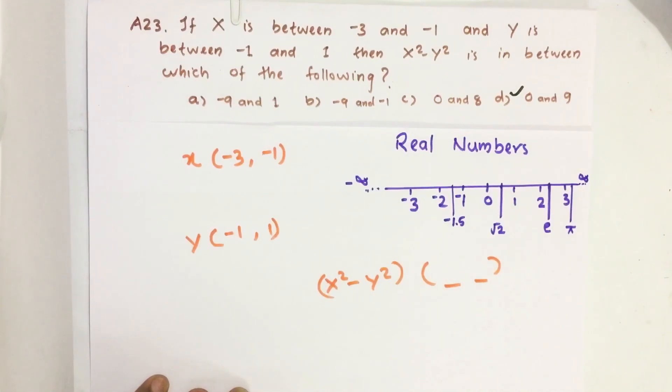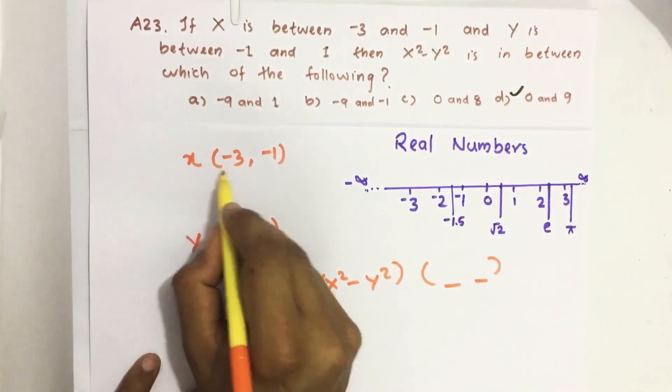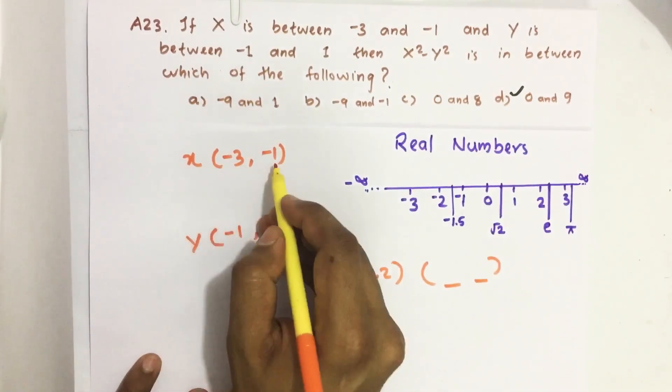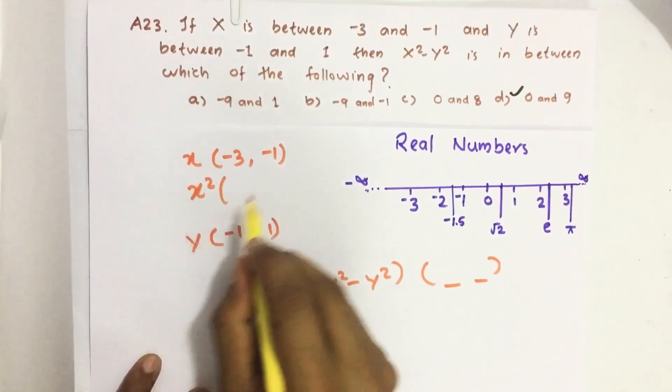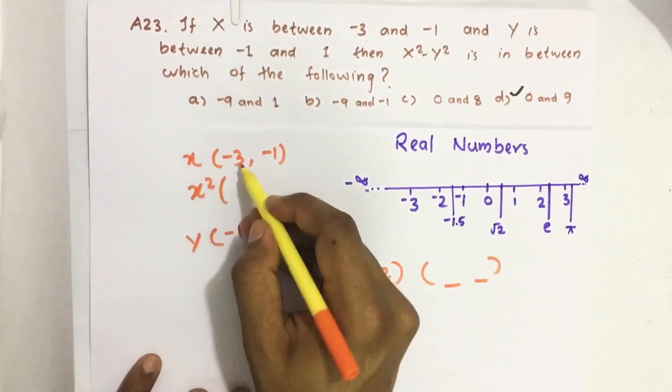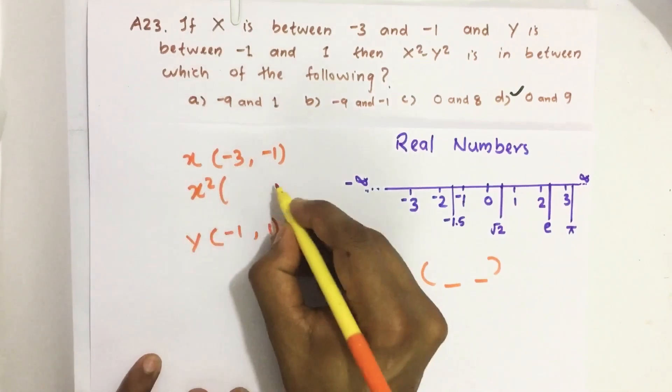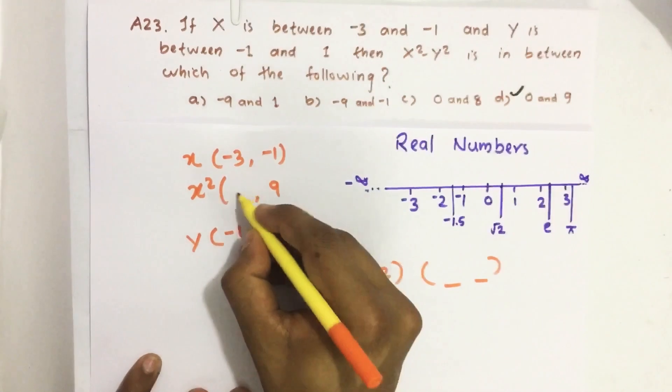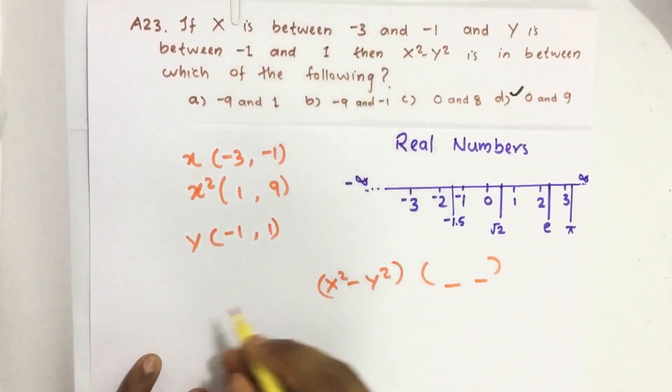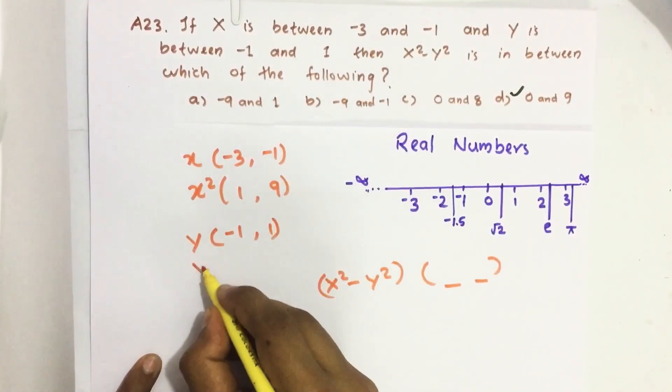So here when x is between -3 and -1, then x² will be between the maximum limit of x² will be (-3)² which is 9, minimum limit will be (-1)² which is 1. Now let us see what is the limit of y².